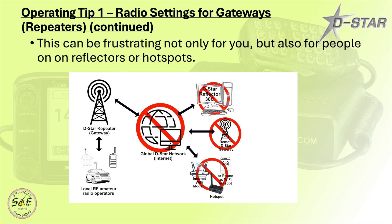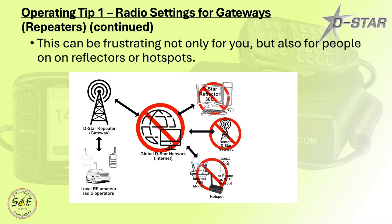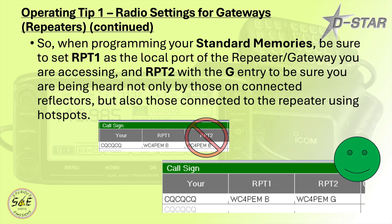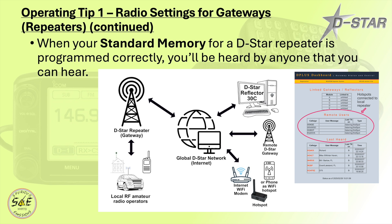This can be frustrating for not only you but also the people on reflectors or hotspots. The answer to this problem is easy: when you're programming your standard memories, make sure you set RPT1 as the local port of the repeater and gateway you're accessing, and RPT2 with the G entry to make sure you're being heard not only by those connected to reflectors but also by those connected using hotspots. When your standard memory for a DSTAR repeater is programmed correctly, you'll be heard by anyone you can hear — including anyone on the local DSTAR repeater gateway, those on the global DSTAR network, people connected to the reflector, any remote DSTAR gateways, and anyone connected to the gateway using a hotspot.